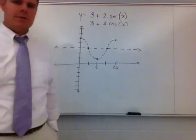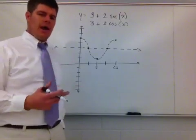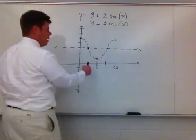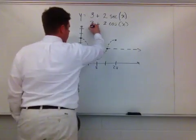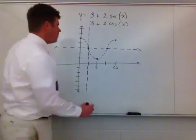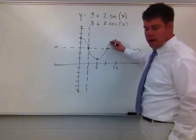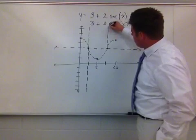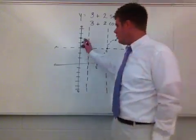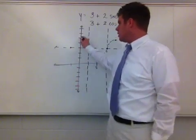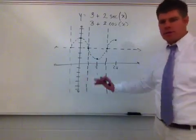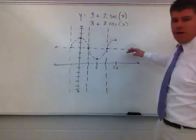Now I find where my cosine curve intercepts the imaginary central axis. Wherever the cosine crosses that axis, I place a vertical asymptote. At π/2, y=3 is a vertical asymptote, so I draw that in. Another vertical asymptote is at 3π/2. I can also continue the pattern to the left: at negative π/2 there's another vertical asymptote. This pattern goes on forever in both directions.